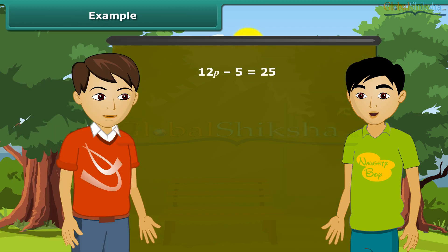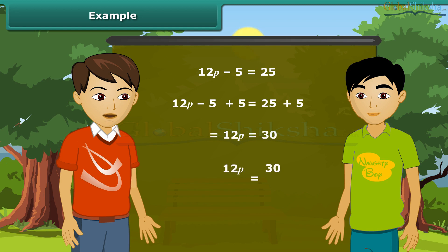Ajay, can you solve this equation? Yes. To get P on the left hand side, we will add 5 to both sides. We get 12P = 30. Now divide both sides by 12. We get the answer P = 5/2.